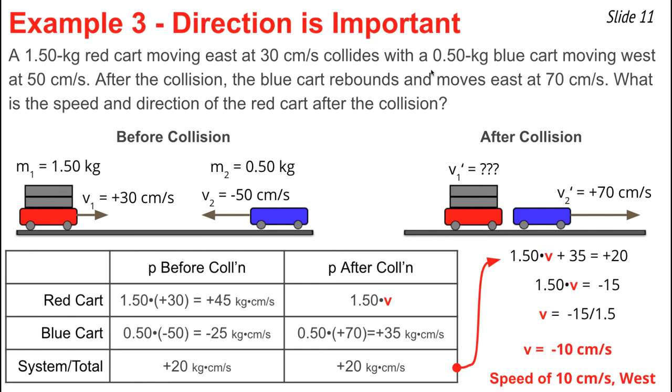The unit here is centimeters per second. So the velocity of the red cart after the collision is negative 10 centimeters per second. So the speed is 10 centimeters per second, and the direction is west.